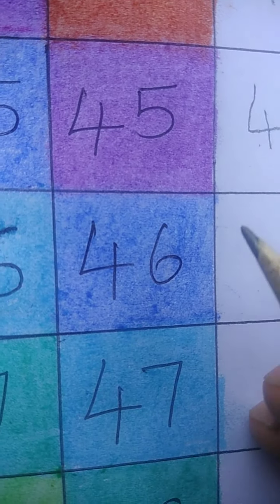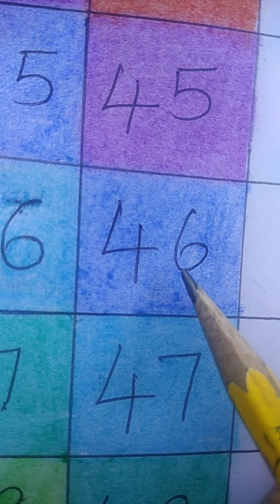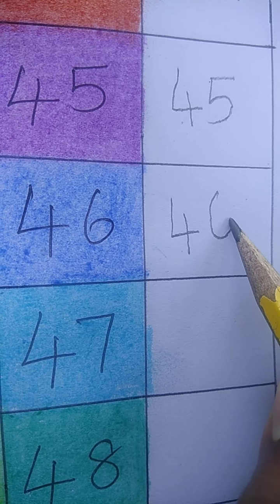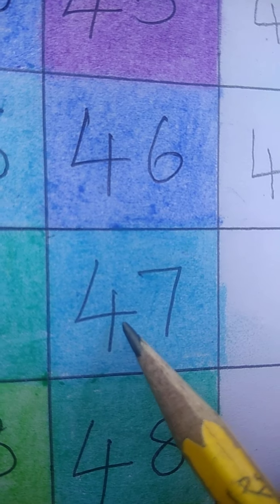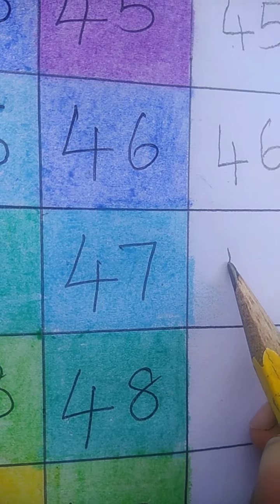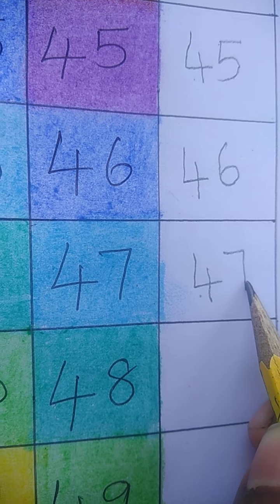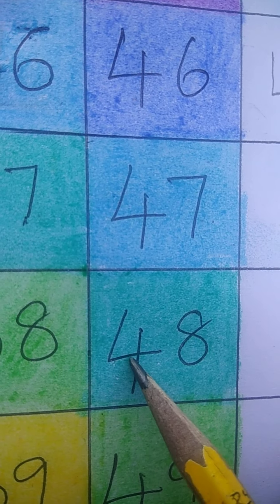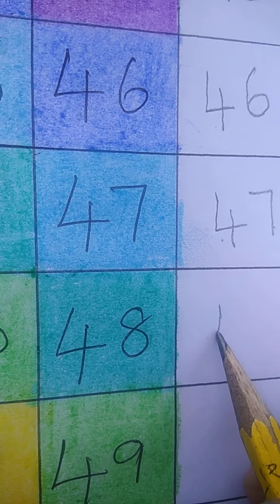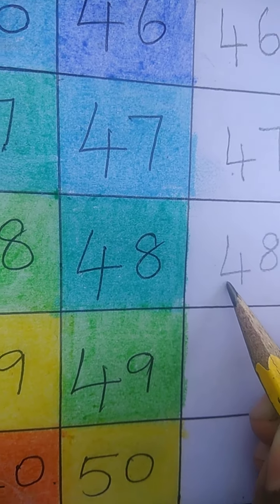45. Next 46. 4 6 46. Next 4 7 47. Write 4 and then 7. 4 7 47. Next 4 8. 4 8 48. Write 4 8 48.